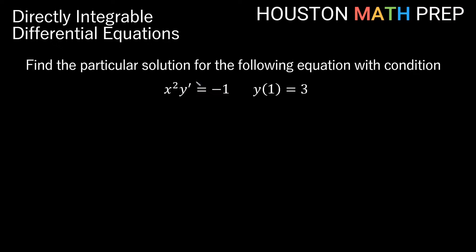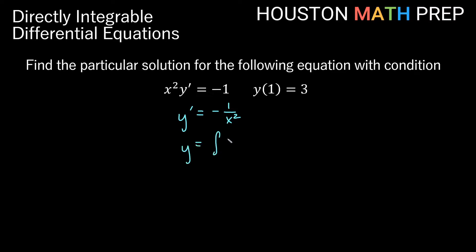Let's look at another first order equation — we can tell it's first order because we have y prime. We want to find the particular solution given a condition. We have x squared times y prime equals negative 1, and we want the particular solution when y(1) equals 3. First, let's find the general solution. This isn't written as y prime equals a function of x, so we divide both sides by x squared to get y prime equals negative 1 over x squared. Now it's in directly integrable form, so y equals the integral of negative 1 over x squared dx.